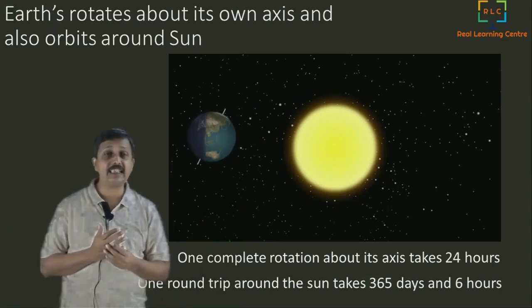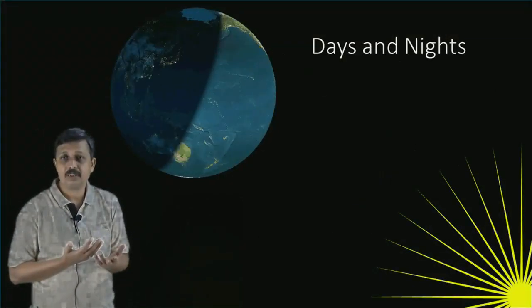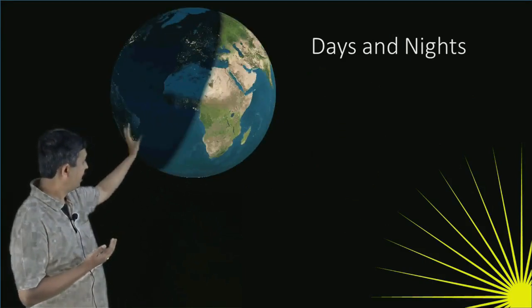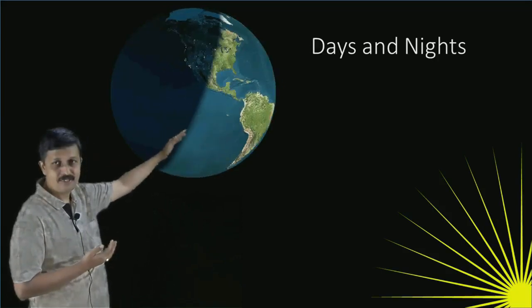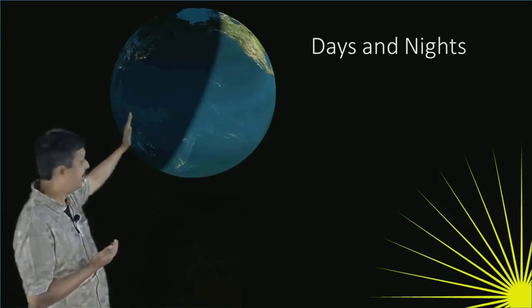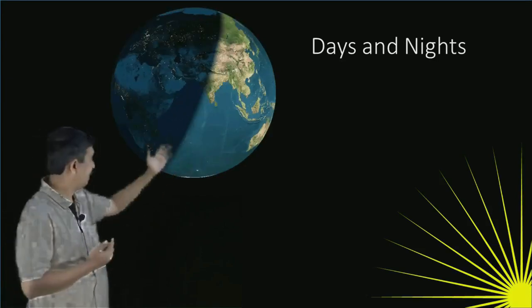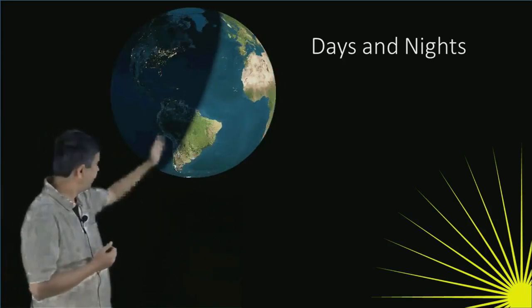You can see the days and nights, how do they get cast, how are the days and nights happen. Just watch this: the Sun is giving light and Earth is rotating on its own axis. You can see on the side of the Sun, whichever is facing the Sun, only that side you can see the light is there and the other side it's a shadow. Wherever that light is, that side is day; the other side is night.